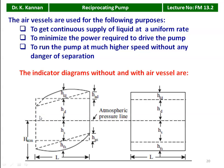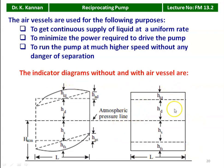The indicator diagram with and without the air vessel: the indicator diagram without the air vessel shows inclined and curved dotted lines, due to acceleration and friction losses in the reciprocating pump. With the air vessel, because of the continuous supply of water, you get a horizontal line at the top and bottom of the indicator diagram. It becomes a rectangle, making it easy to calculate the area of the indicator diagram.